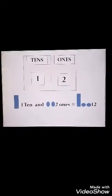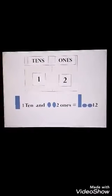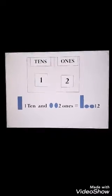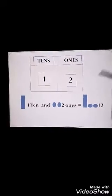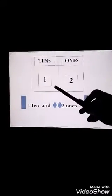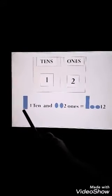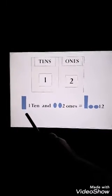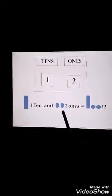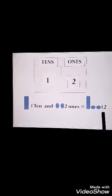You have the number twelve. Twelve ko hum tens or ones mein kaise split karenge? We have two ones and one ten. One ten means you have ten ones, then you have two ones, which makes twelve.